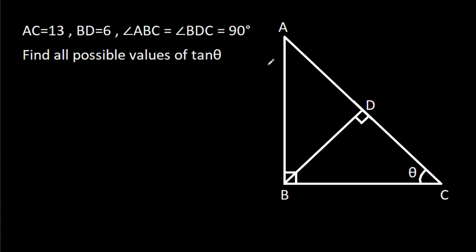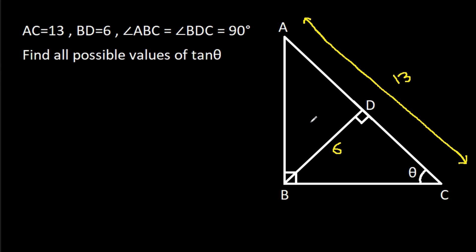In this video, we have been given that AC is 13 and BD is 6, and angle ABC is equal to angle BDC, that is 90 degrees, and angle ACB is theta. Then we have to find tan theta.